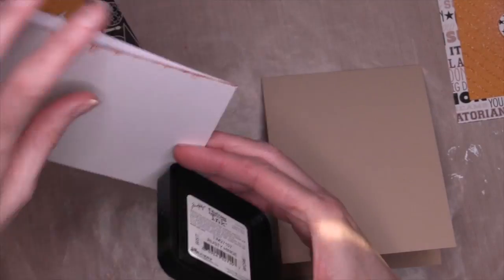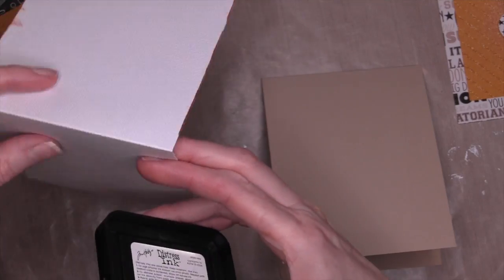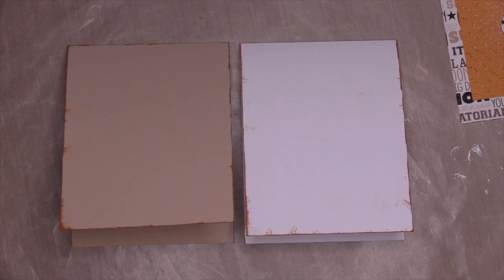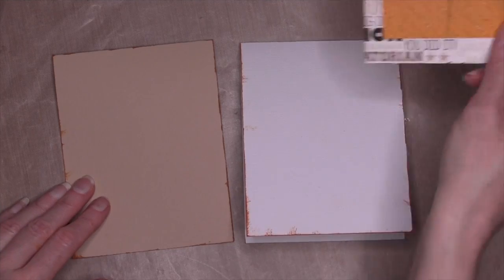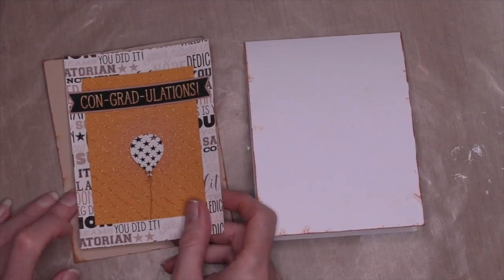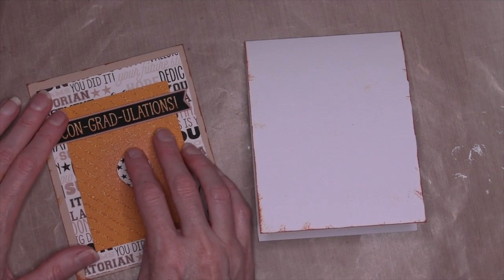I'm going to take my Rusty Hinge distress ink and just run the ink over the edges of the card. The white paper is American Crafts white textured cardstock, and the other one I'll have to give you a link to—it's just one I found at my local craft store.